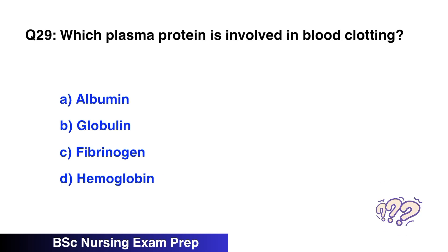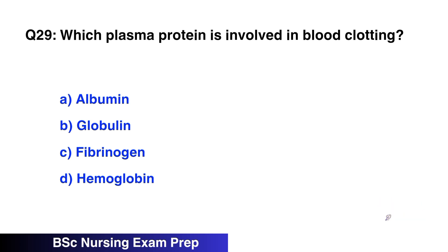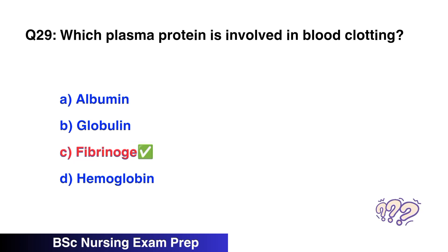Question number 29: Which plasma protein is involved in blood clotting? The right option is C, fibrinogen.